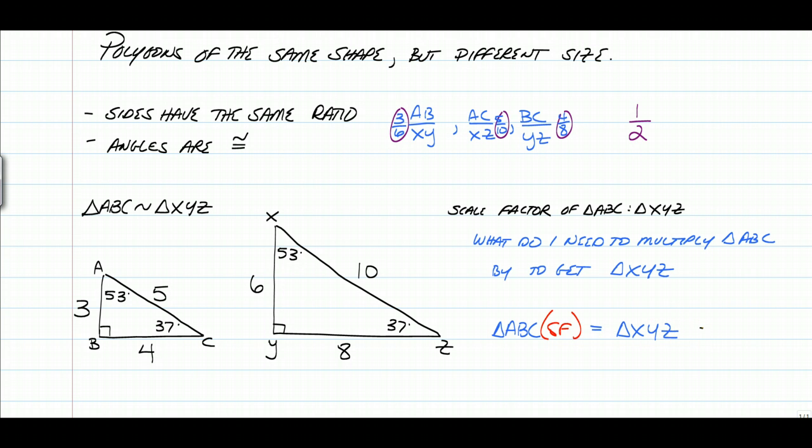So what you want to do is you want to look at this really quick and say that triangle ABC is going to need to be multiplied by something to make it bigger to give you triangle XYZ. So to get from 3 to 6, we need to multiply the triangle by 2.